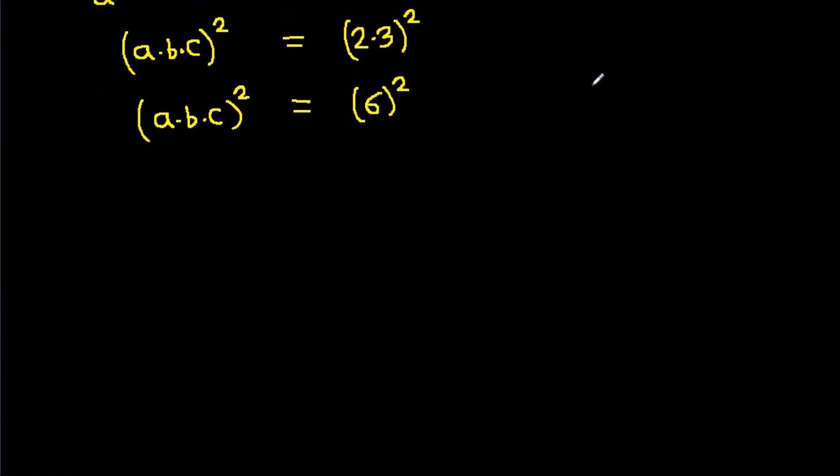And now, if X squared is A, then X is equal to plus minus square root of A. So here, ABC will be plus minus square root of 6 squared.